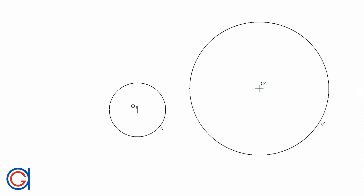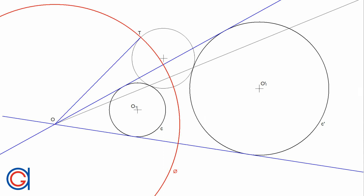Hello, today we are going to learn about mid-circles. A mid-circle of two given circles is the circle which would invert each of the two given circles into the other.